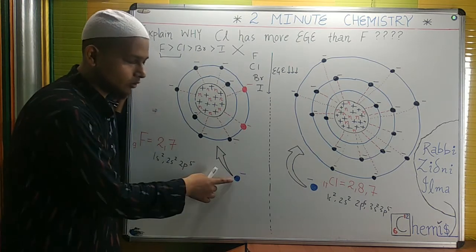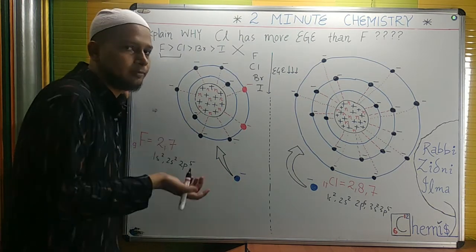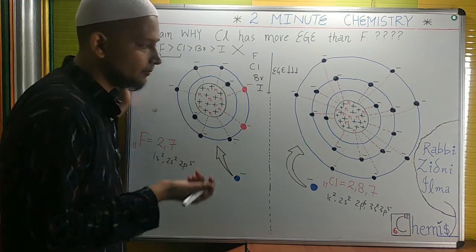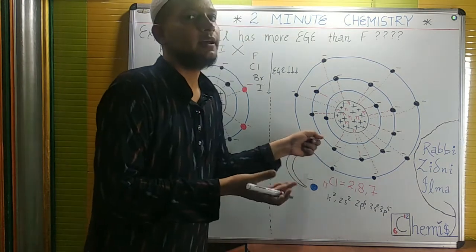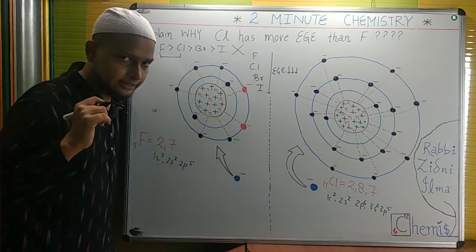With the addition of this electron, F⁻ will be formed and energy will be released. That will be electron gain enthalpy. Here, Cl⁻ will be formed and the energy associated will be electron gain enthalpy.